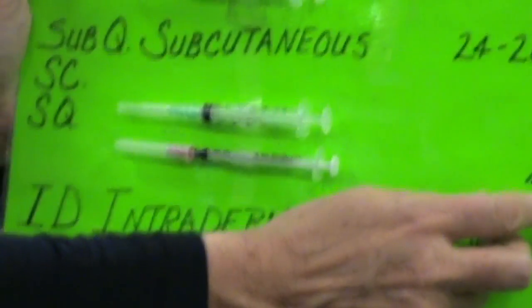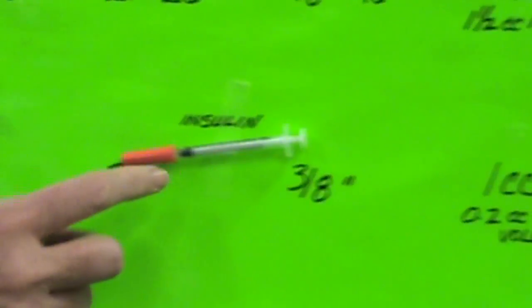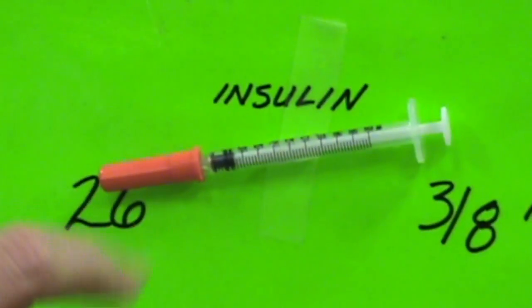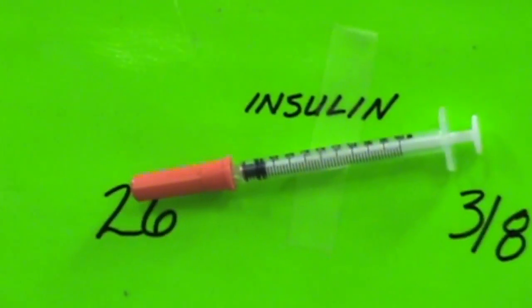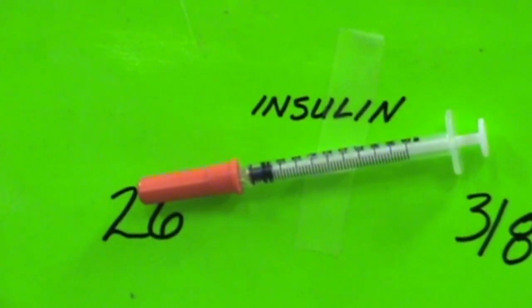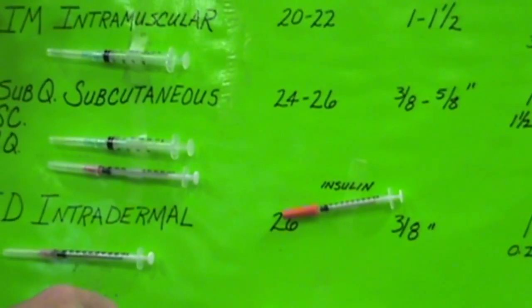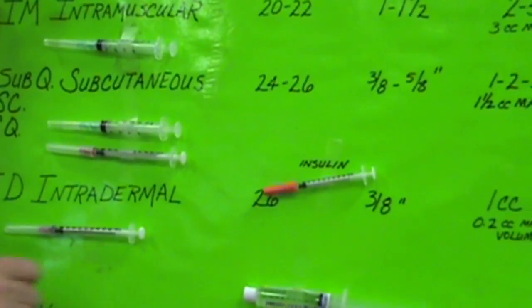Coming over to the insulin, you see it's pretty tiny, and it has an orange cap. It comes in units, and usually the needle is non-detachable. So when you give insulin, you usually give it sub-q, 90 degree angle, because it's such a short needle.